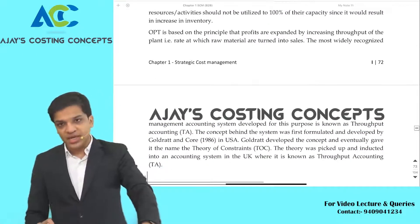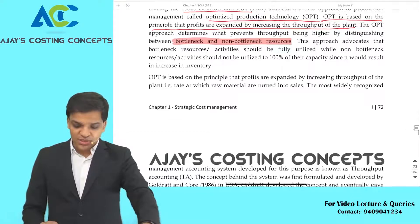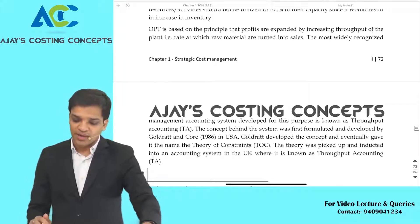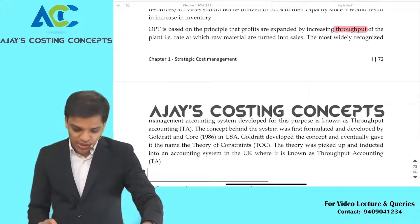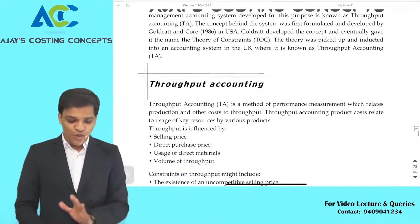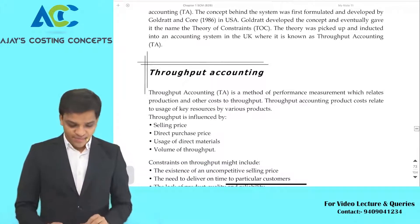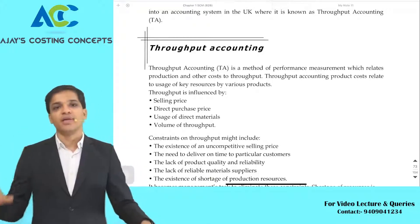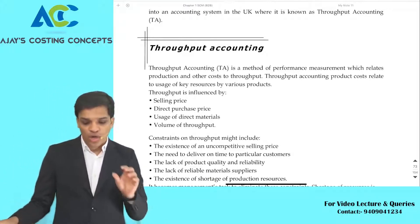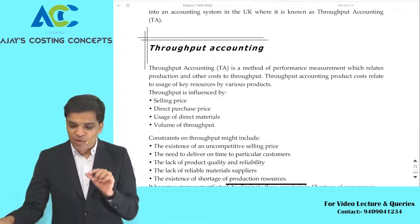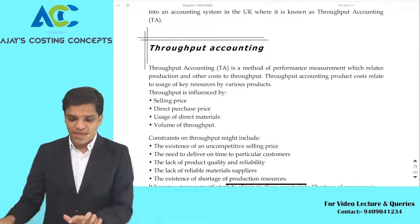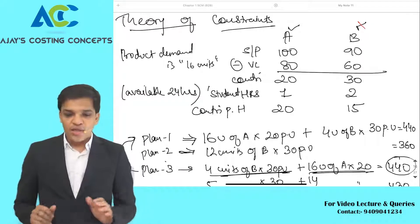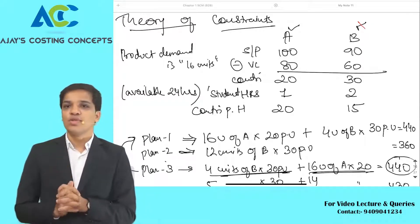OPT — Optimized Production Technology — is based on the principle that profits are expanded by increasing throughput of the plant. There is a throughput accounting concept, which is a performance measurement system where accounting is done on the basis of performance measurement. Now let us understand what throughput is, and what bottleneck and non-bottleneck activities are.